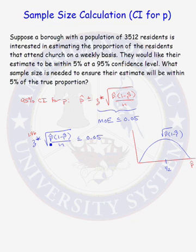You will get a sample size larger than you need if your true proportion is anything other than 0.5. So let's do that for this problem. Plugging our values into the inequality, we have 1.96 times the square root of 0.5 times 0.5 divided by N is less than or equal to 0.05.